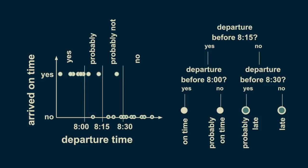This decision tree has two levels. Decision trees can have as many levels as you want. Most often, each decision point or node has only two branches. This example has a single predictor variable and a categorical target variable. The predictor variable is our departure time, and our target variable is our punctuality — whether or not we're late. Because it has only two distinct values, it's categorical. Decision trees with categorical targets are also called classification trees.